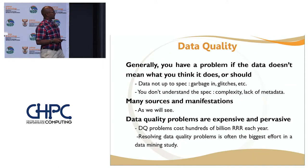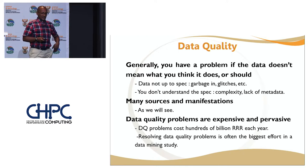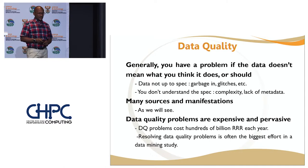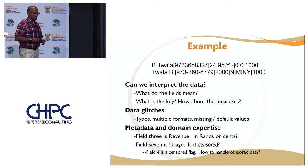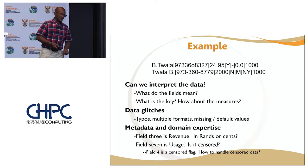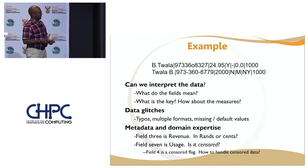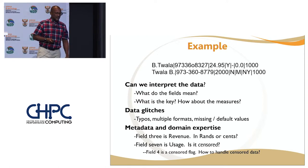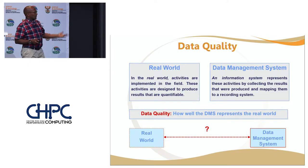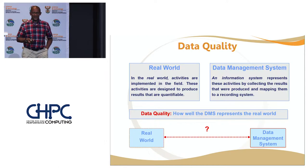In terms of data quality: we have a problem if data doesn't mean what you think it should. That's a key thing to keep in mind. Data quality problems are very expensive — companies spend lots of money cleaning their data. For example, given a dataset with fields like my initials and last name, can you actually interpret what those fields mean? Data glitches, metadata issues, and domain expertise gaps all contribute. In the real world, you need a data management system to deal with these quality issues.